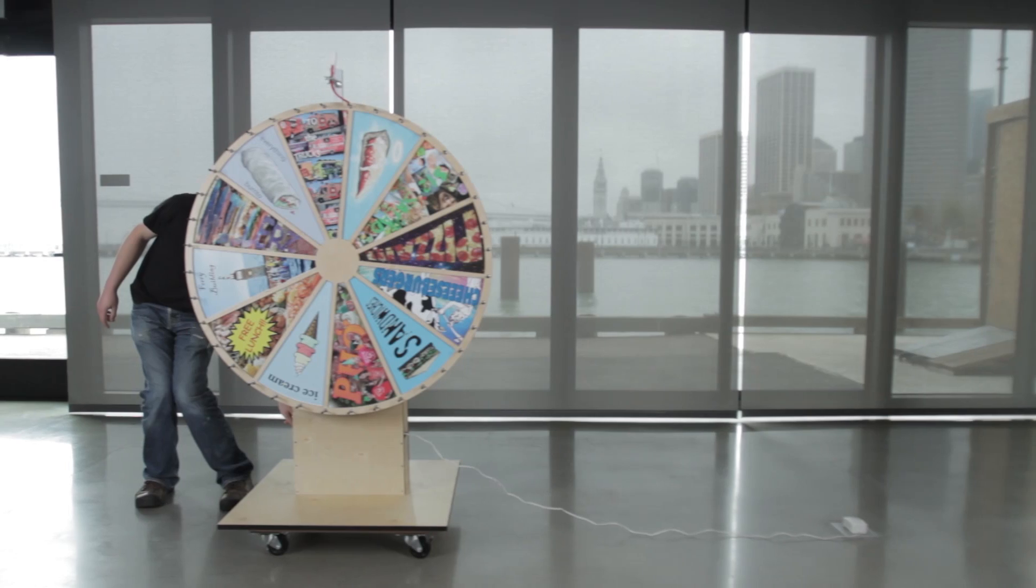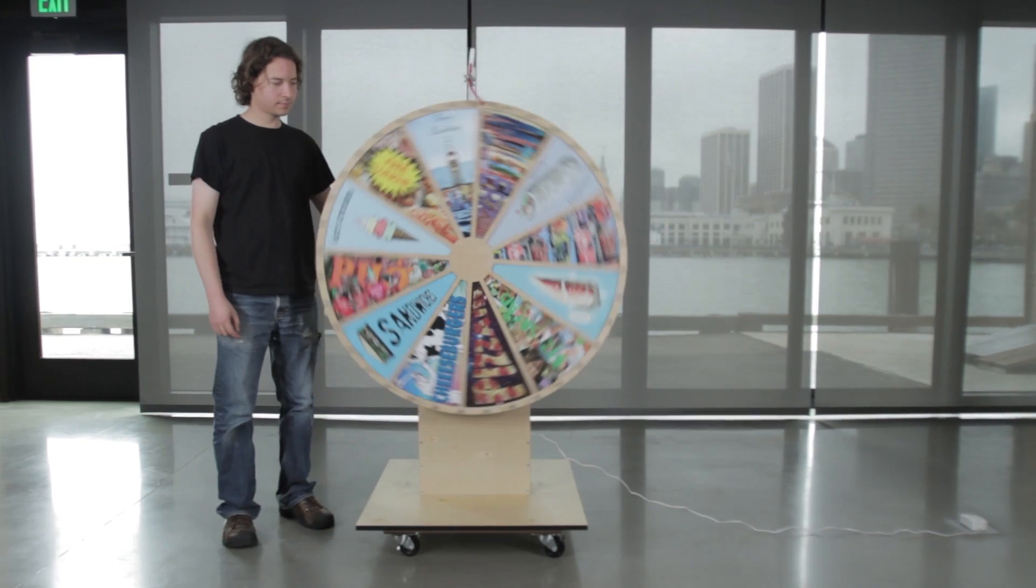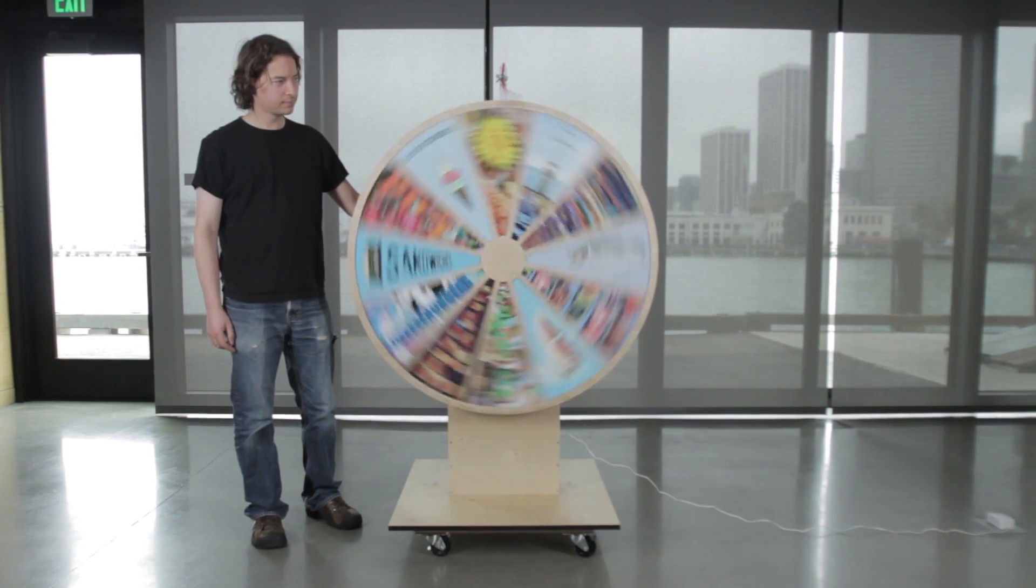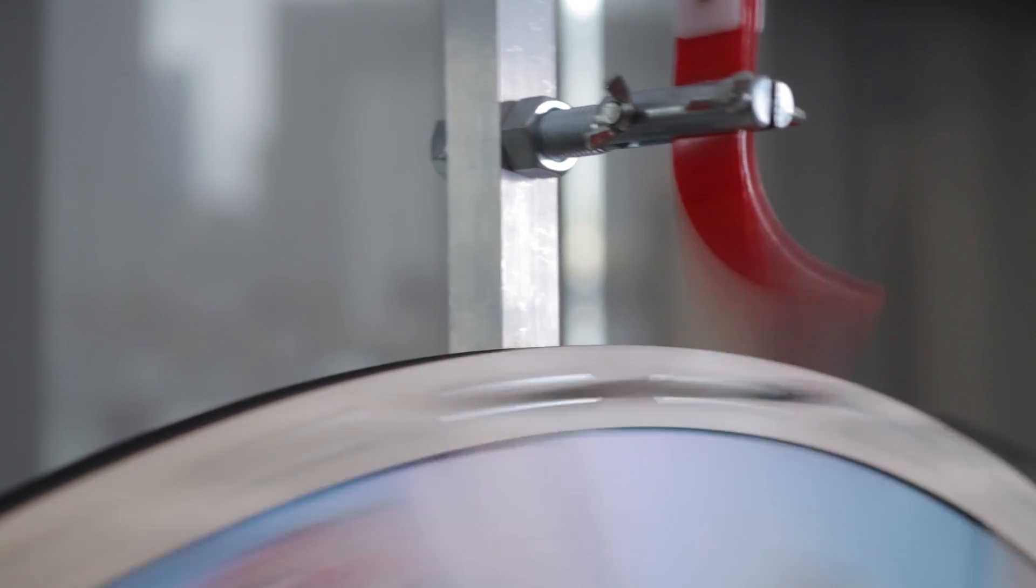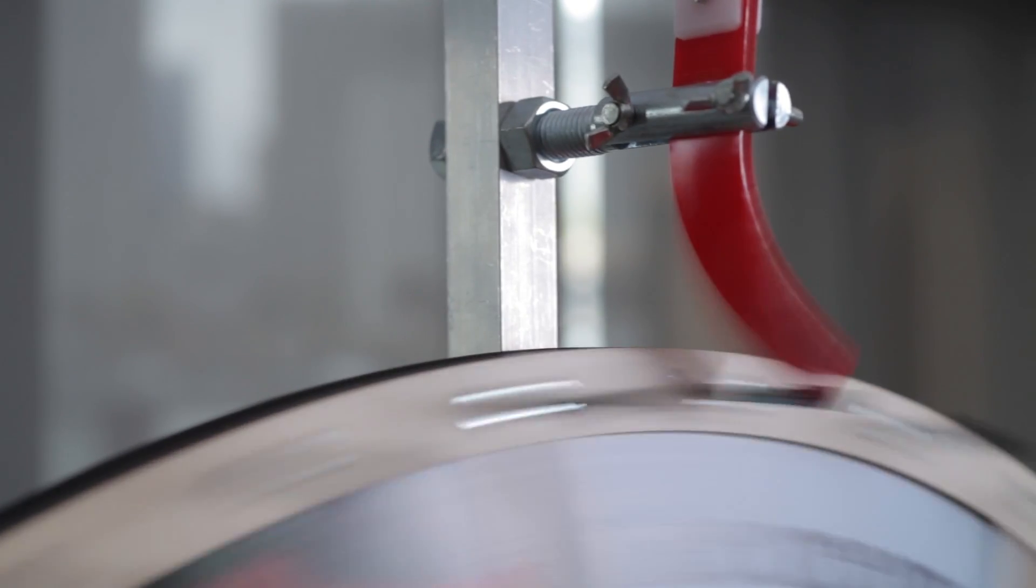I made a lunch decider wheel because I have a really hard time deciding what to eat for lunch. A lunch decider wheel is basically a carnival-like wheel that spins on its own every day at 11:30 and selects one of 12 lunch options.